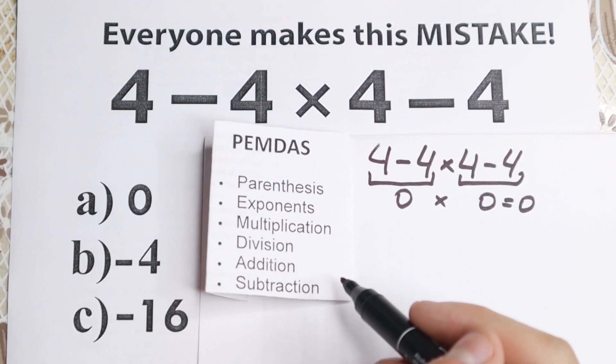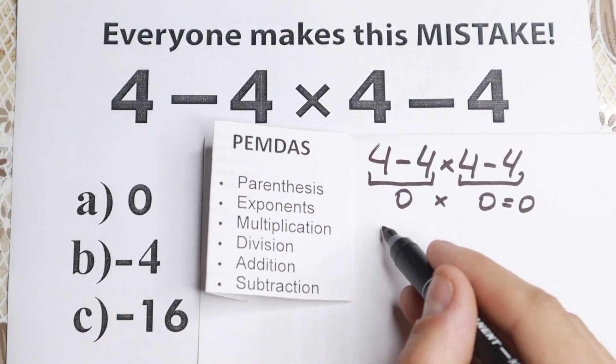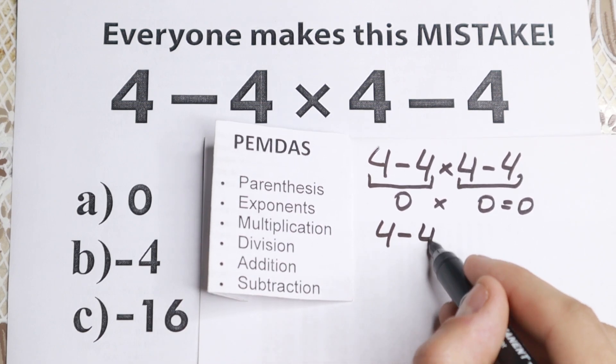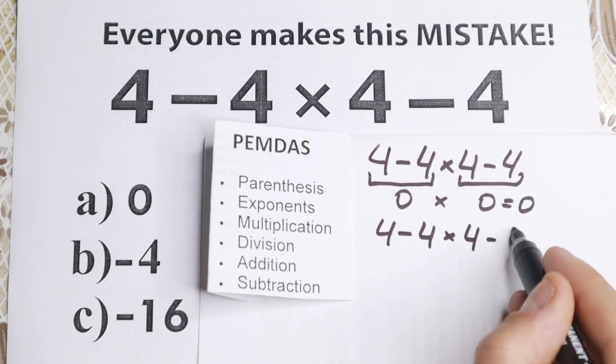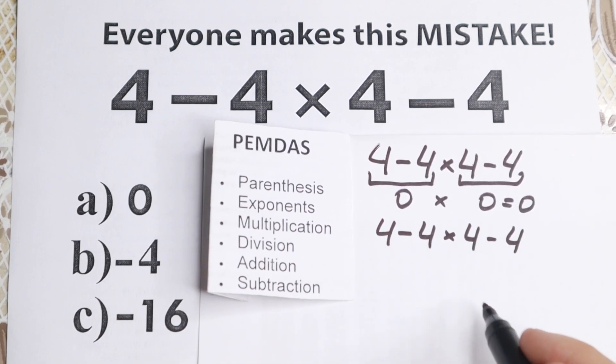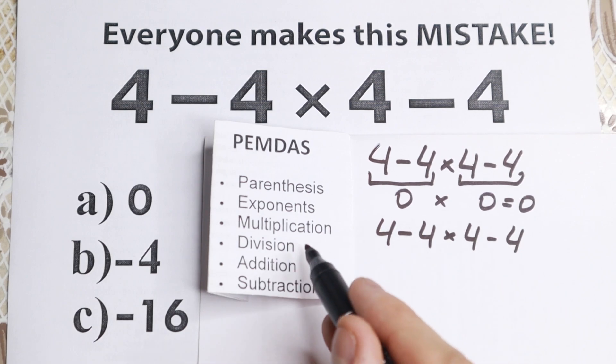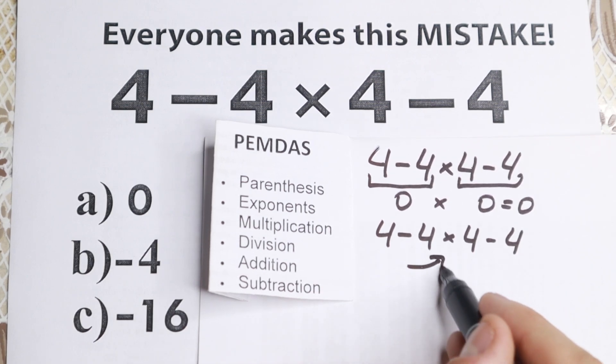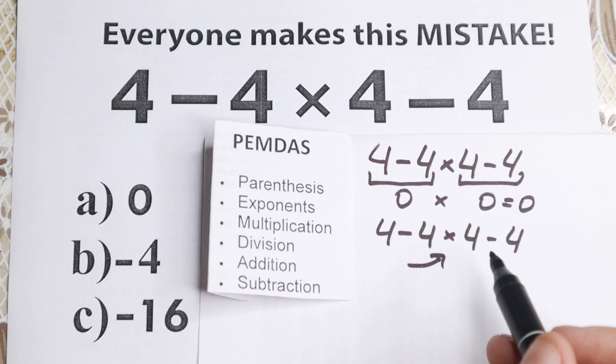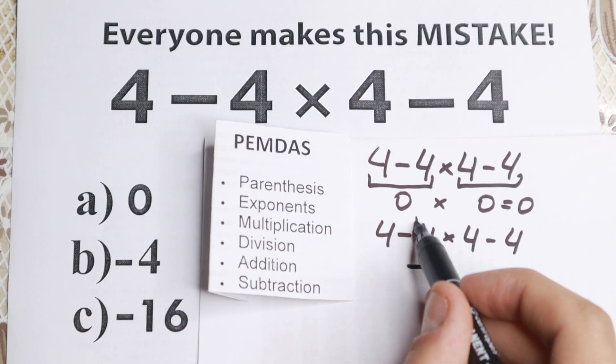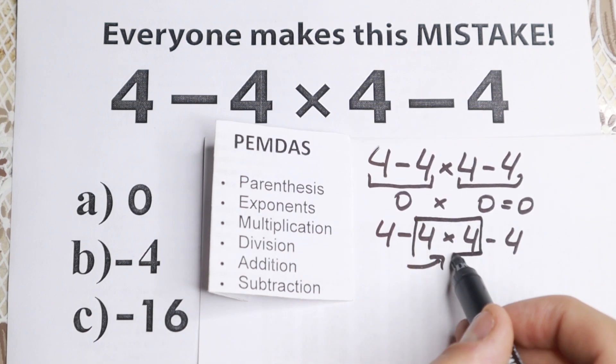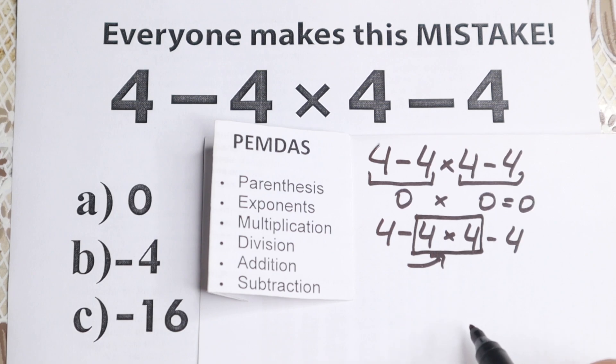And then we have multiplication and division part. And right here I just wanted to rewrite this problem, so 4-4 times 4-4. So we have this question right here, and we have multiplication division part. I don't see any division sign, but I see multiplication sign. This sign is right here, and this is really great, because we need to start with this multiplication at first. So this is our first step in our solution, because we need to start for multiplication and division.